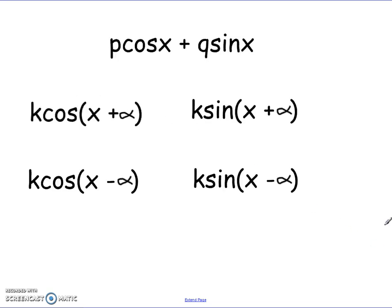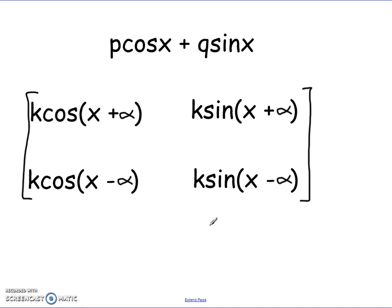That little trick is that we have to take whatever the function is written in this form — p cos x plus q sin x — and write it in one of the four forms that we know, which are our wave functions. Once we're able to do that, we're actually fairly quickly and easily able to read off our maximum and minimum values.